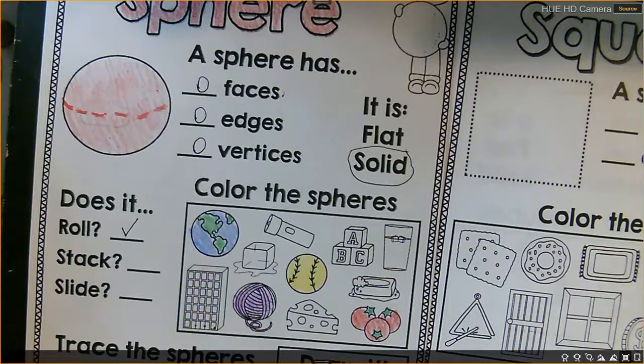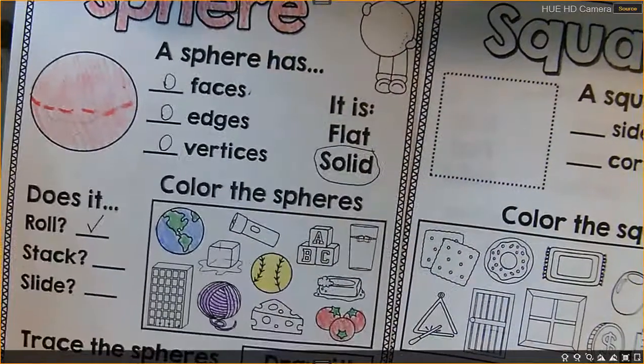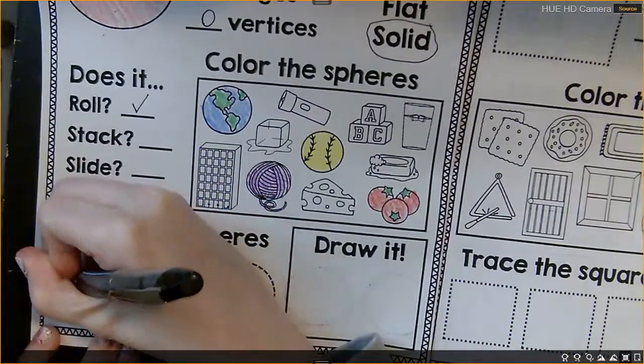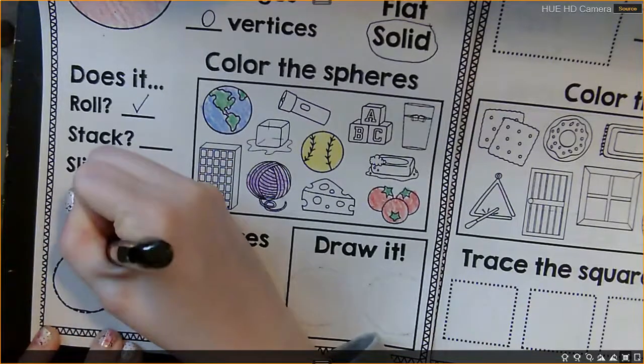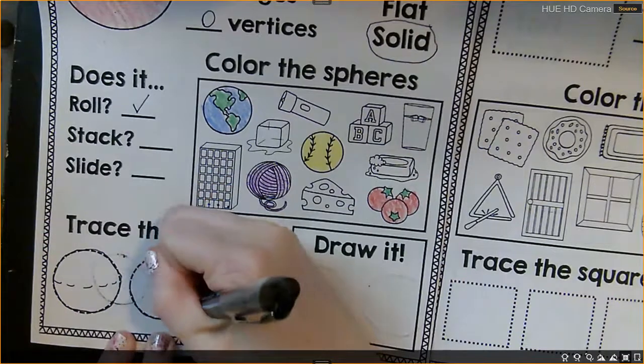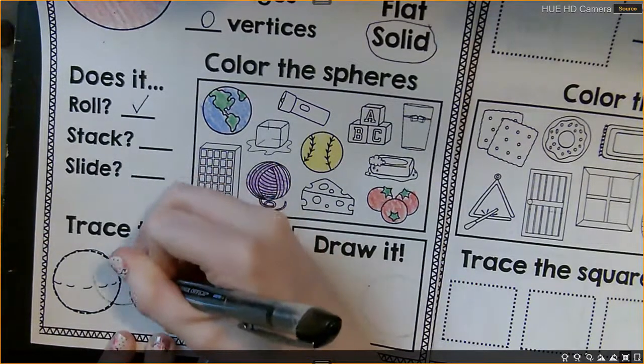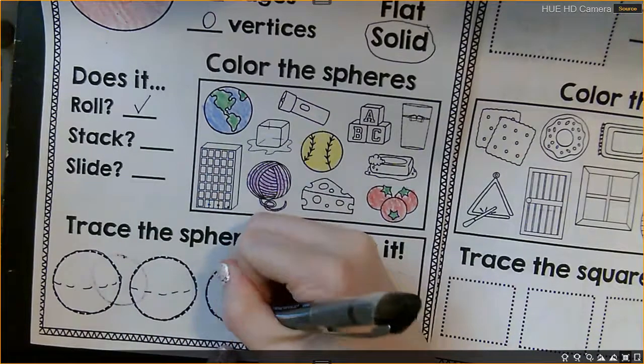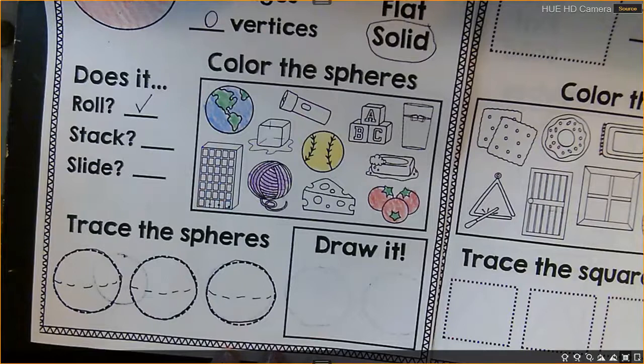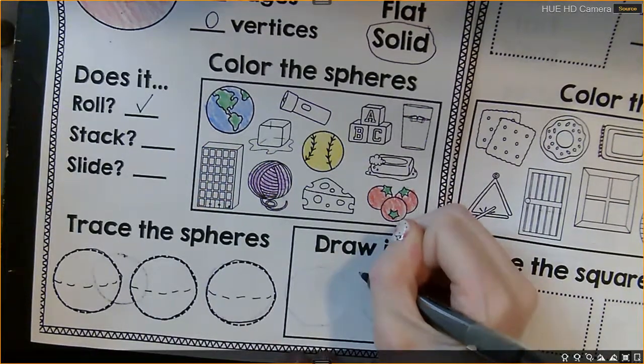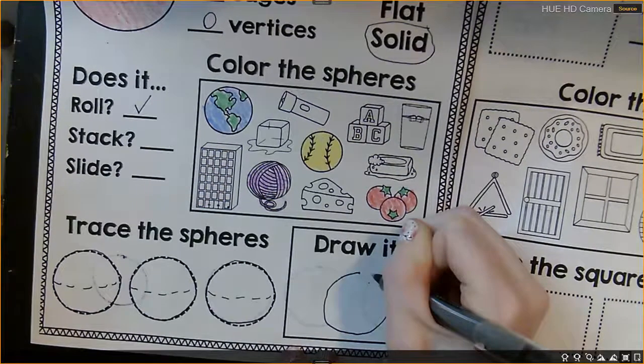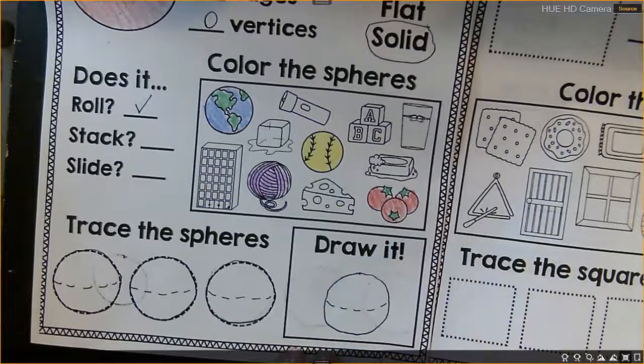Now we're going to bring our paper down a little bit and we're going to trace the spheres. And we're going to start right here and we're going to go around. And then I like to add those lines to show that it's 3D. So we can hold it in our hand. Just like that. And then we're going to draw it on our own. So I'm going to start right here and I'm going to be very careful. I'm going to go around and draw a circle. And then I'm going to add those lines to show that it is 3D.